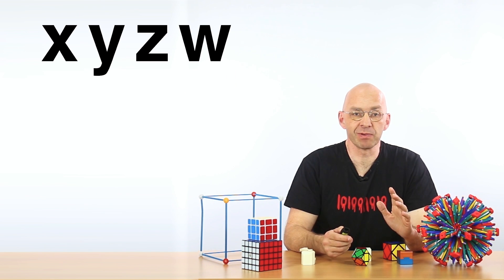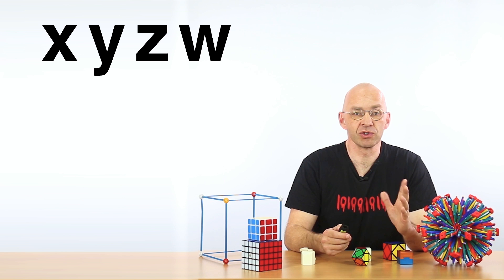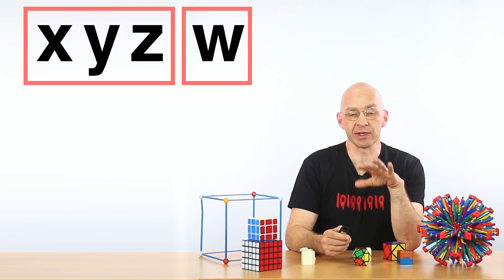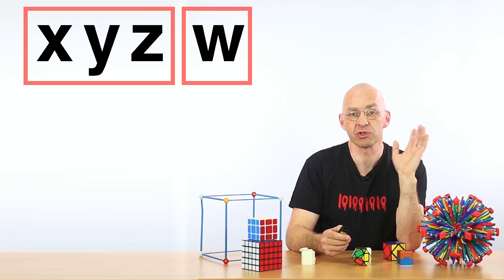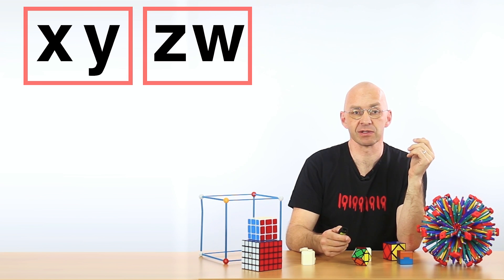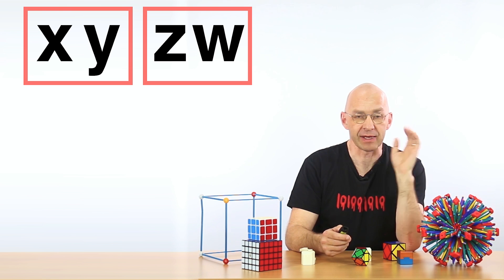In 4D we can split up the 4D coordinates in two ways. A 3D and a 1D part, x, y, z and w. Or two 2D parts, x, y and then z, w. Okay, so I've prepared a couple of animations again.